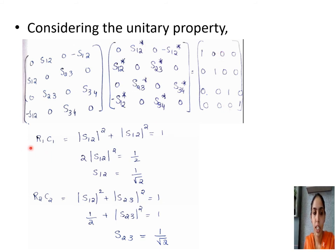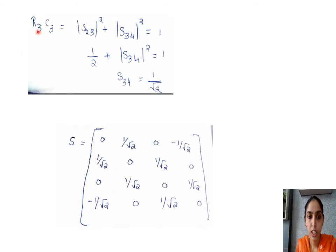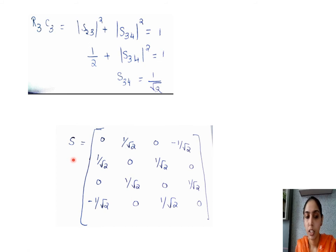Solving further by matrix multiplication: taking R1·C1 gives S12 = 1/√2; taking R2·C2 gives S23 = 1/√2; and taking R3·C3 gives S34 = 1/√2. We can now write the final S-matrix for the hybrid ring. When asked to write the S-matrix of a hybrid ring, provide the figure, state the properties, write the reduced S-matrix, solve using unitary property, and show the final elemental values.